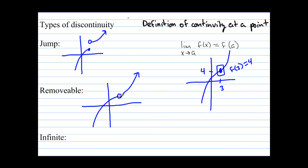So now that's an open dot, so this is a removable discontinuity, because to remove the discontinuity, all I'd have to do is fill that dot in. If we put a point up here, this is still a removable discontinuity.